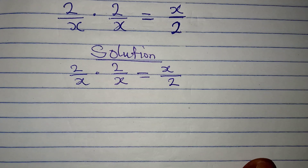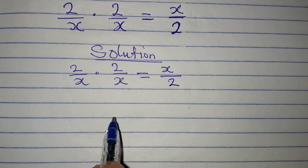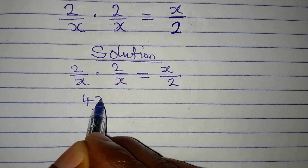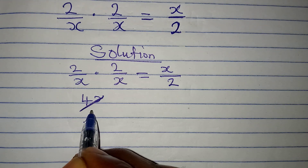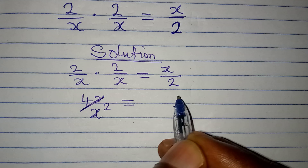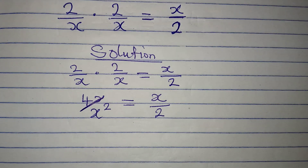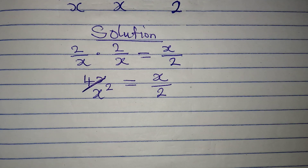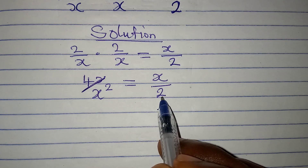The first step we are going to take is to multiply the left-hand side, so that we can have 4 over x squared, which will be equal to x over 2. So we have 4 over x squared equal to x over 2.